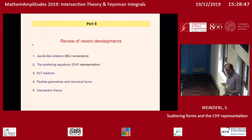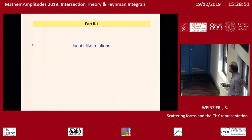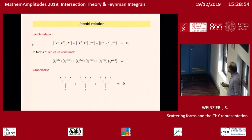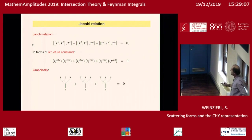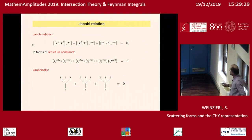Let me review some recent developments, starting with Jacobi-like relations. From a Lie algebra — SU(3), SU(N), U(N) — you have the Jacobi relation, which you can rewrite in terms of structure constants. Graphically, each vertex corresponds to a structure constant, repeated indices are summed over, and you get three diagrams which are the same diagram with different labelings of the upper legs. The Jacobi identity simply tells you that the sum of these three vanishes.